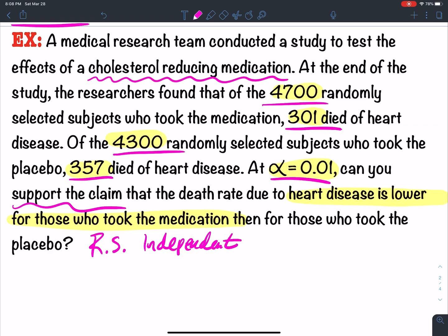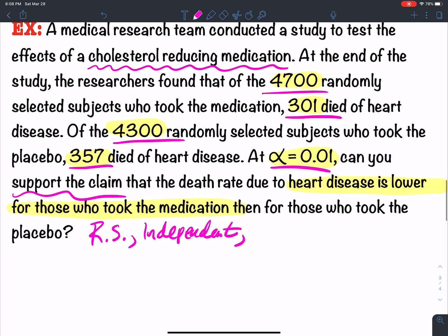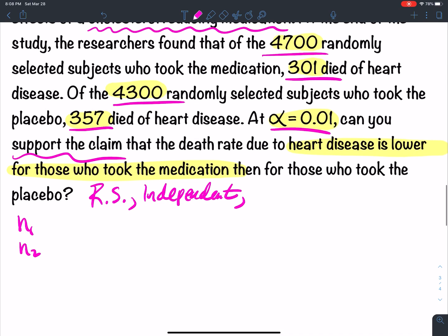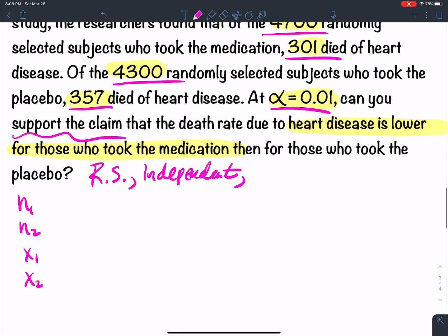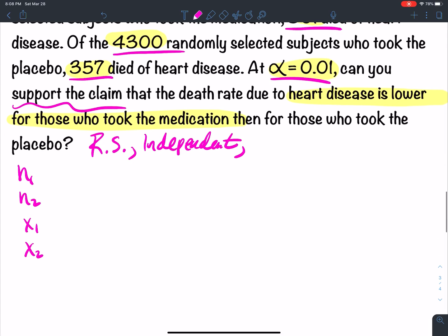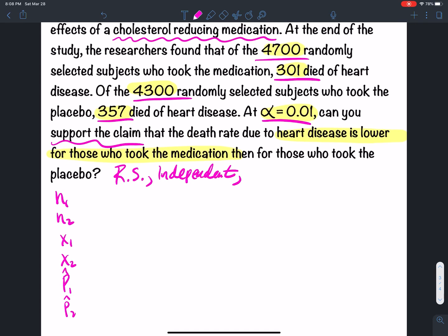So if you took the placebo, you didn't take the drug, and if you took the drug, you didn't take the placebo. What we need to calculate, we need to find n1, n2. We need to figure out what x1 is, x2 is. We need to do P1 hat, P2 hat. So let's just start there. See if we can work through this problem.